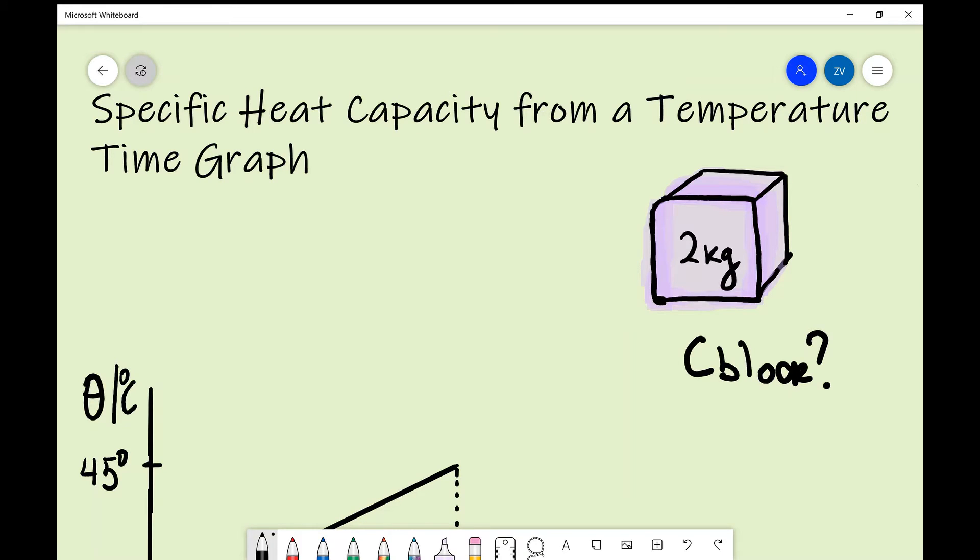What we're going to be looking at today is finding the specific heat capacity of a substance from a temperature time graph.